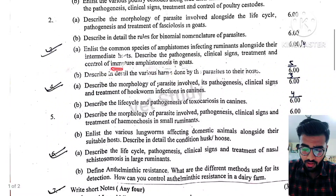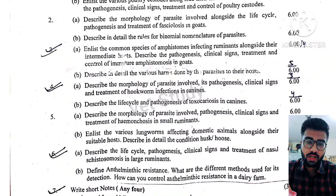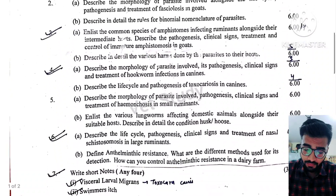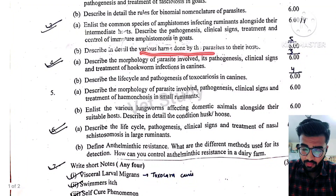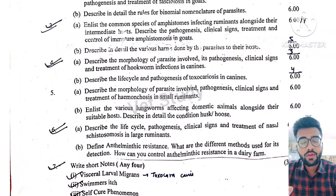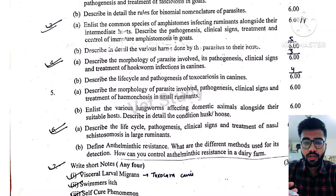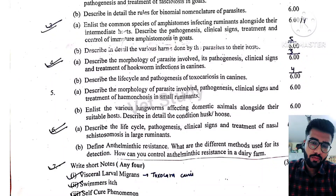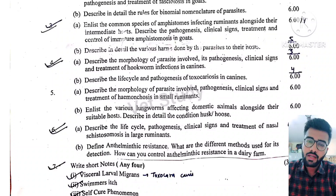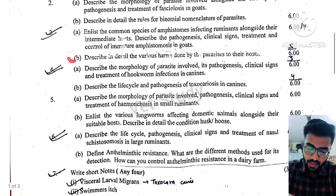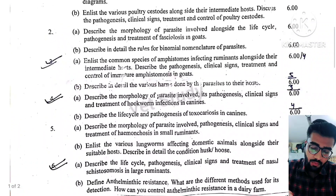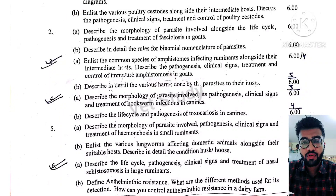Immature amphistromes in goat was also asked. Next, we have the various harms done by parasites in their host — this was both an internal and external question. So there are some questions that are very important and frequently asked, and some that are new. Harm done by parasites and poultry cystroids were the two internal questions.